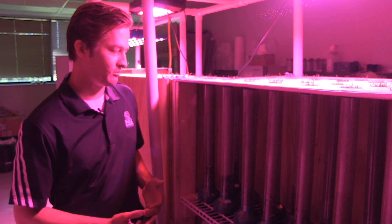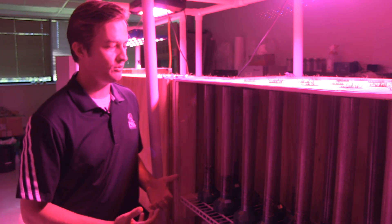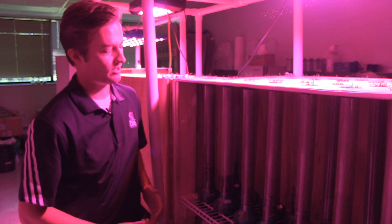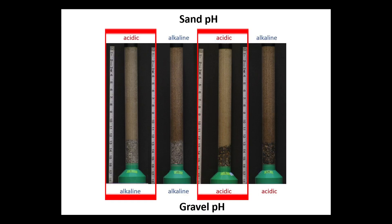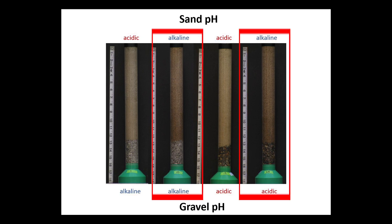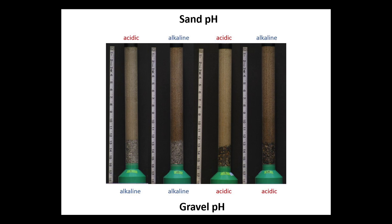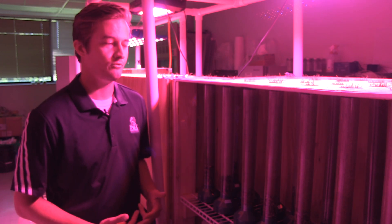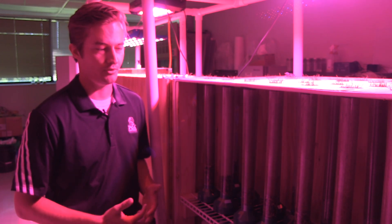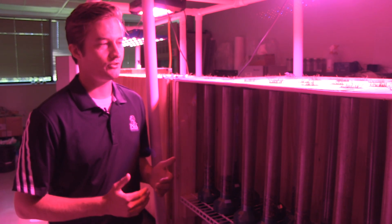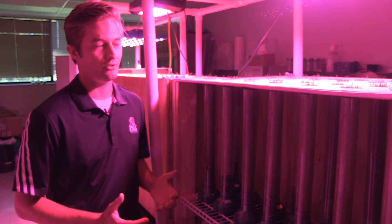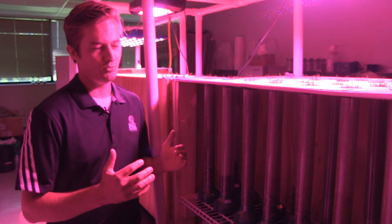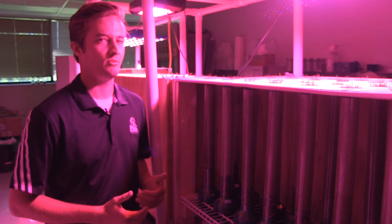We have these columns here where we've simulated golf course putting green root zones with 12 inches of sand over 4 inches of gravel. We have two different sand sources: a low pH sand from Florida and a high pH sand from Wisconsin. We also have two different gravel sources: a low pH gravel from Minnesota and a high pH limestone gravel from Nebraska. All four combinations are arranged in a 2x2 factorial design, and we're going to add two different rates of ferrous sulfate to those columns, then track how iron moves through them and accumulates.